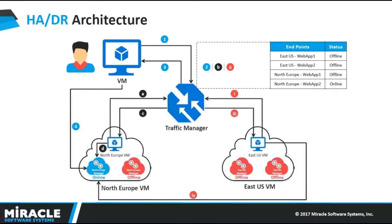Moving on, we have the higher availability and disaster recovery architecture. Here I have two websites running in the East US region and two websites running in the North Europe region. I also have a VM in East US and a VM in North Europe. When I hit the traffic manager URL from the East US VM, the one which is nearest and active will be responding — so first East US web app one will respond.